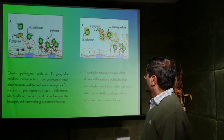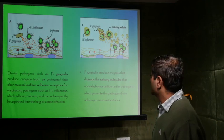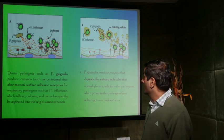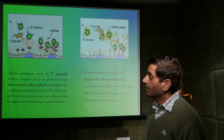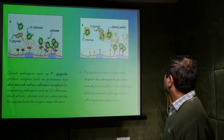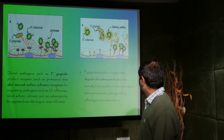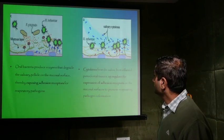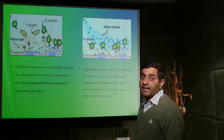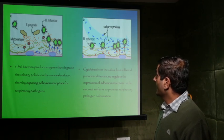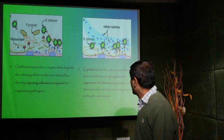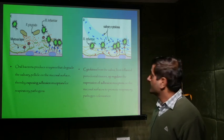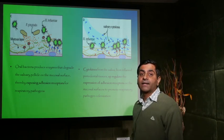Dental pathogens such as Porphyromonas gingivalis produce enzymes such as proteases that alter mucosal surface adhesion receptors for respiratory pathogens such as H. influenzae, which adhere, colonize, and can subsequently be aspirated into the lung to cause infection. P. gingivalis also produces enzymes that degrade salivary molecules that normally form a pellicle on pathogens, preventing them from adhering to the mucosal surface. Additionally, oral bacteria produce enzymes that degrade the salivary pellicle on the mucosal surface, exposing adhesion receptors for respiratory pathogens. Cytokines from inflamed periodontal tissues up-regulate the expression of adhesion receptors on the mucosal surface to promote respiratory pathogen colonization.